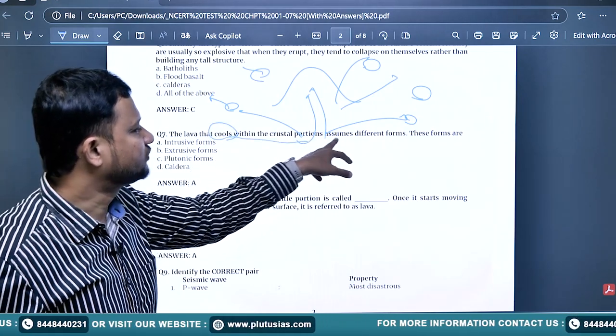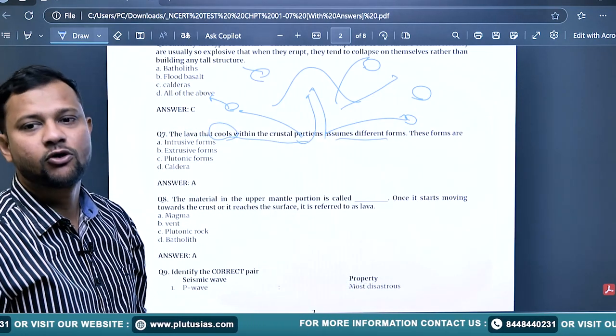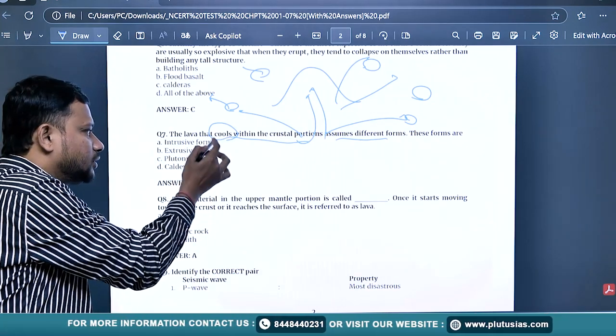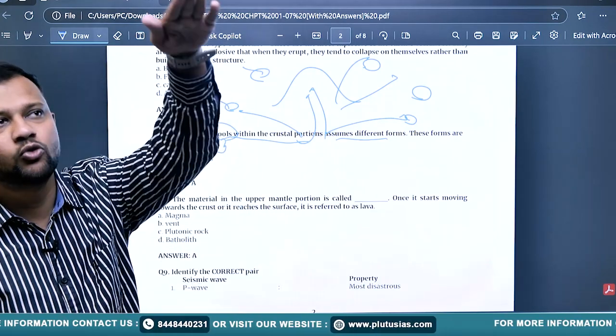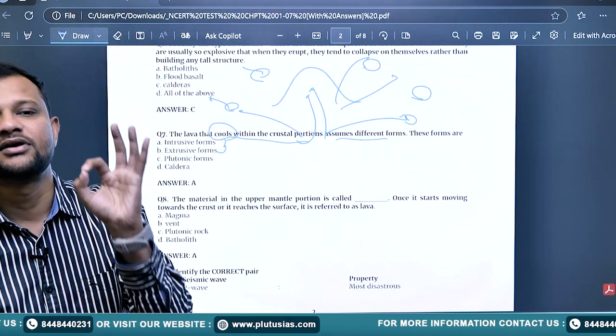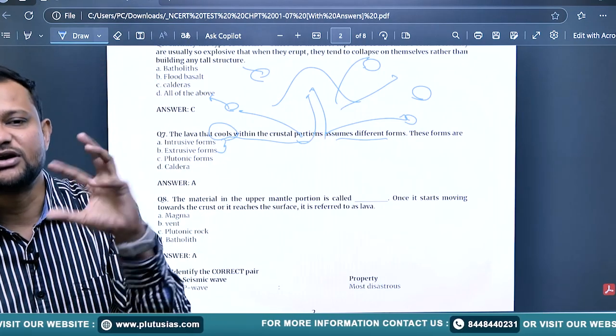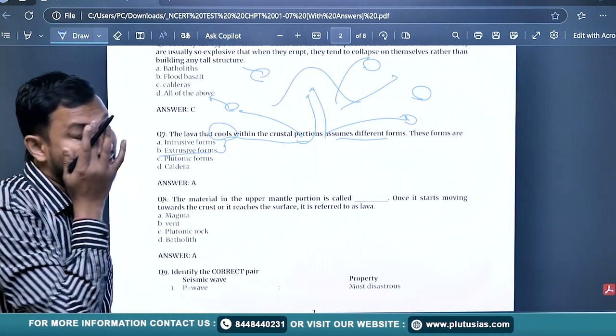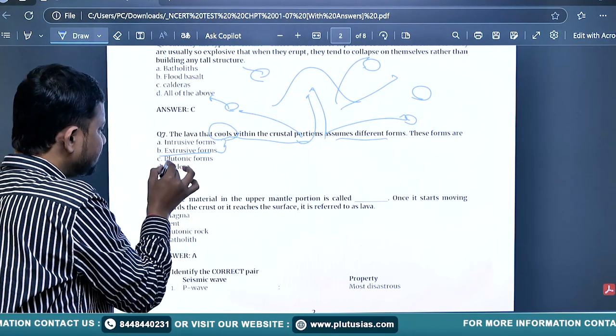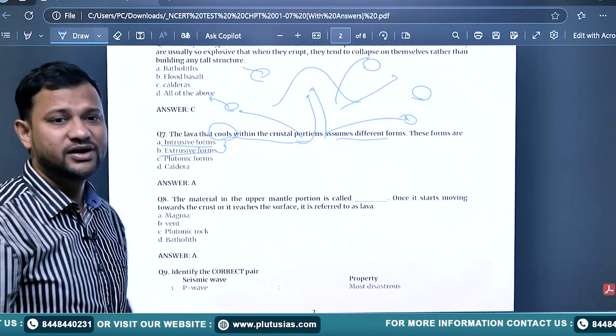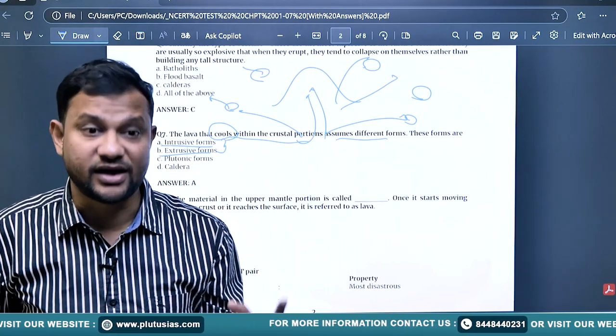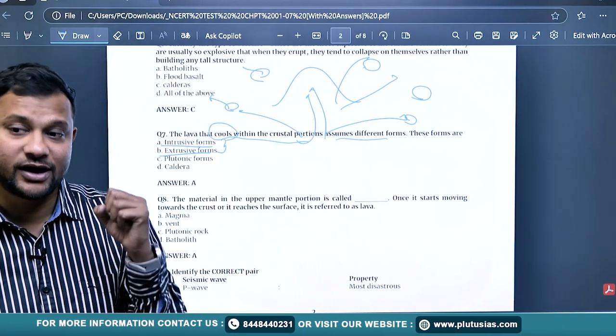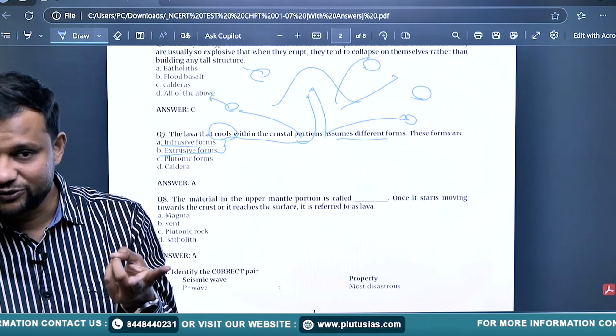The lava that cools within the crust portion assumes different forms. These forms are simply volcanic landforms. If magma cools below the surface, it is intrusive, and if it cools above the surface, that is extrusive form. We have discussed intrusive and extrusive forms like sills, batholiths, laccoliths, phacolites, and extrusive forms.